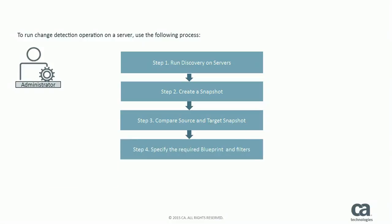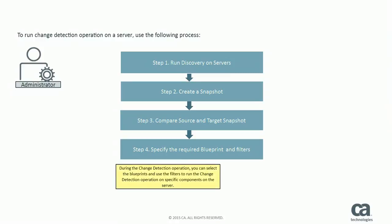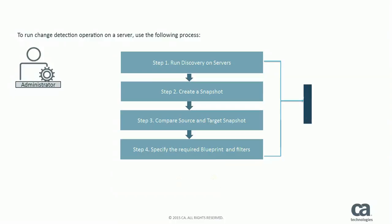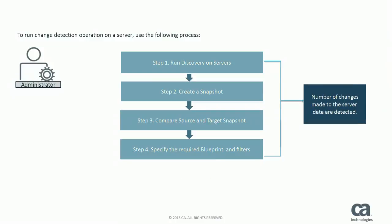Step 4: Specify the required blueprint and filters. During the change detection operation, you can select the blueprints and use the filters to run the change detection operation on specific components on the server. As a result, the number of changes made to the server data are detected.